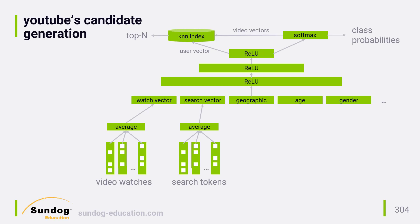They simply average each chunk of the sparse input data. They split up each user's sparse behavior data into chunks of a fixed length, and take the average of each chunk to reduce that data into a fixed length embedding layer that can be used as input to their neural network. They restrict this embedding to the most popular videos or search terms in order to keep it manageable for the scale they are dealing with. Any obscure video you watch ends up getting mapped to the value zero.